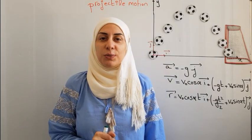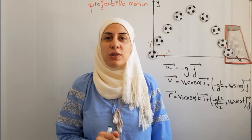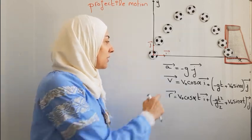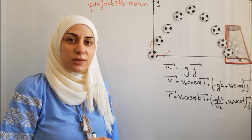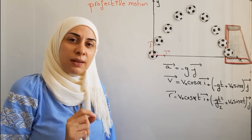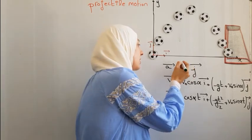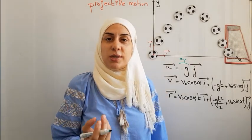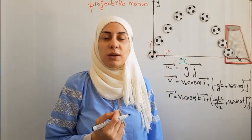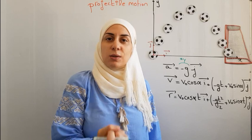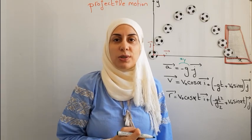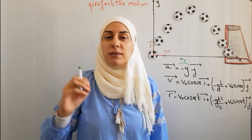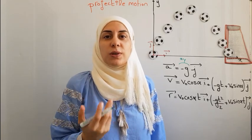In the previous video we derived the equations of projectile motion. The acceleration equals minus g·j, and as you can notice the acceleration has only one component — a_y — because the only force acting on the projectile while in motion is its own weight directed vertically downwards. There is no net force on the horizontal component, so there is no a_x component.